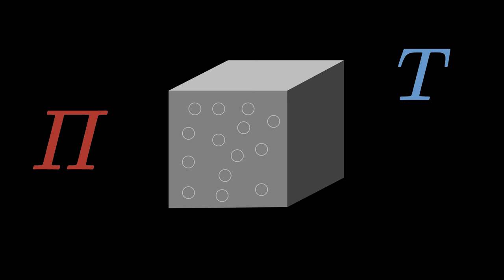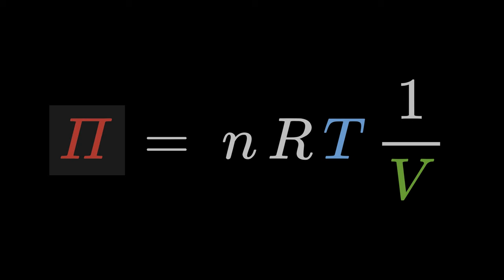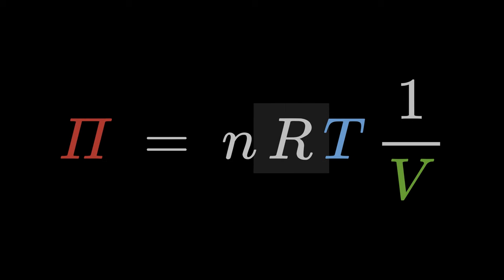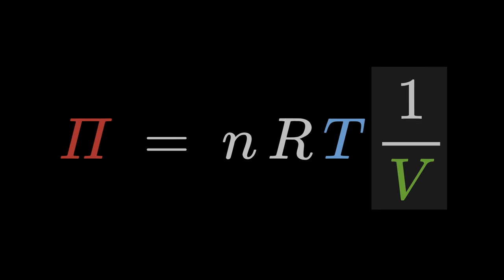Let us consider a system with an ideal gas in it. The state of the gas, or more precisely, its temperature T, its pressure pi, and its volume V are described by the ideal gas equation. Pi is equal to n times r times T times 1 divided by V.